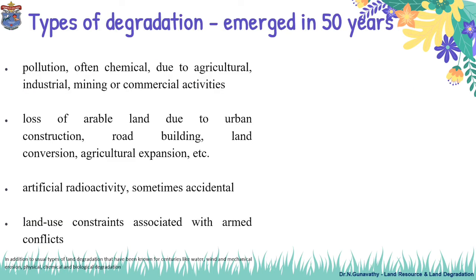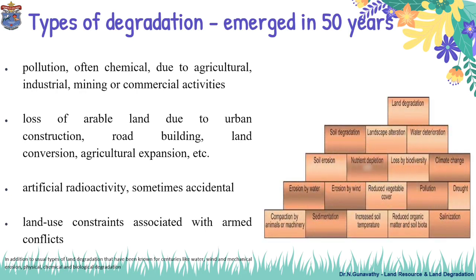In addition to the usual types of land degradation known for centuries — water, wind, mechanical, physical, chemical, and biological degradation — four other types have emerged in the last 50 years: pollution due to agricultural, industrial, mining, or commercial activities; loss of arable land due to urban construction, road building, and land conversions; artificial radioactivity sometimes accidental; and land use constraints associated with armed conflicts.